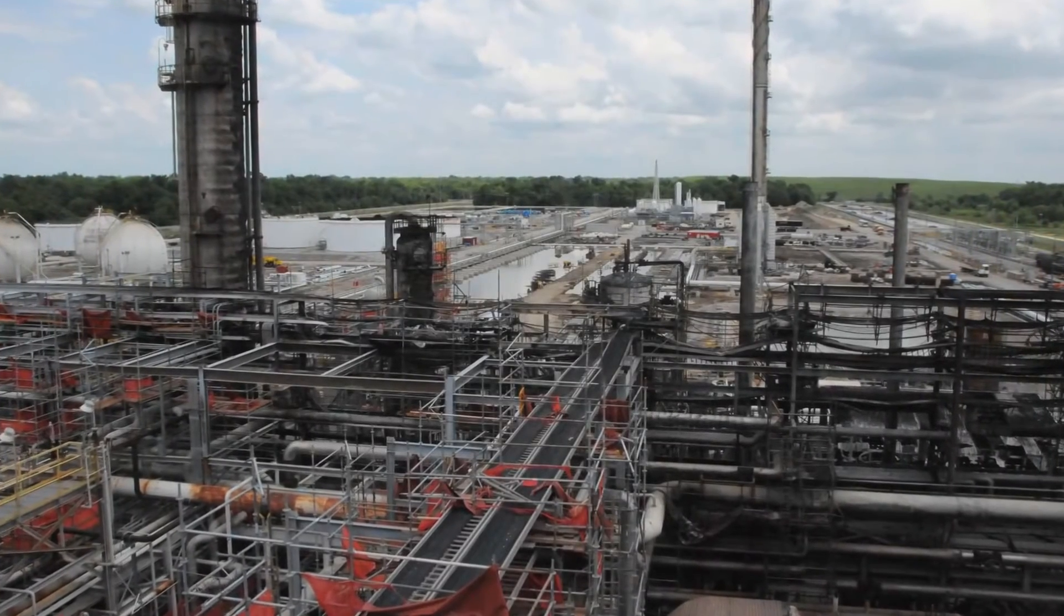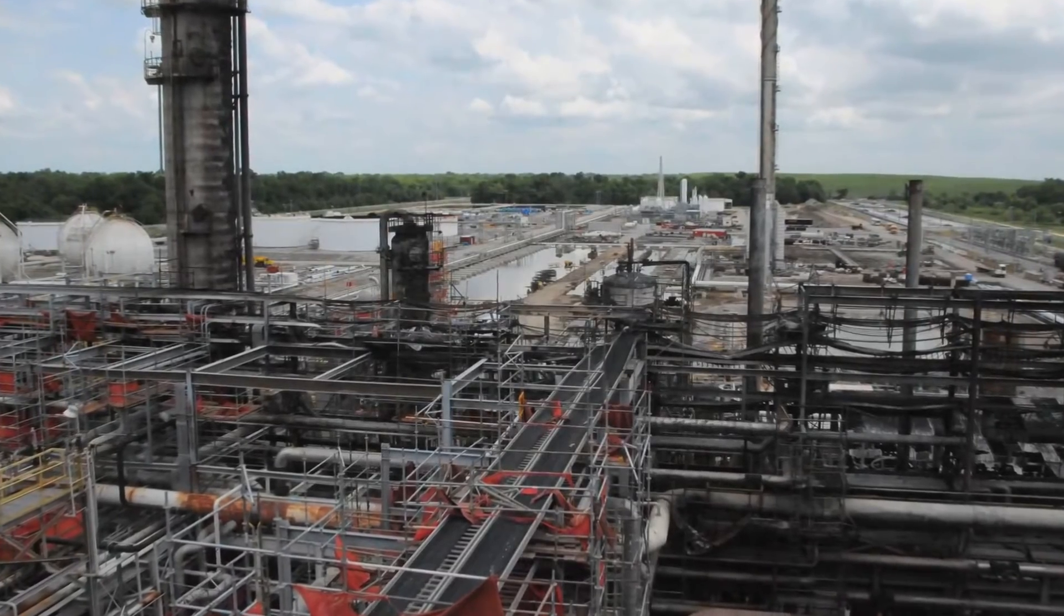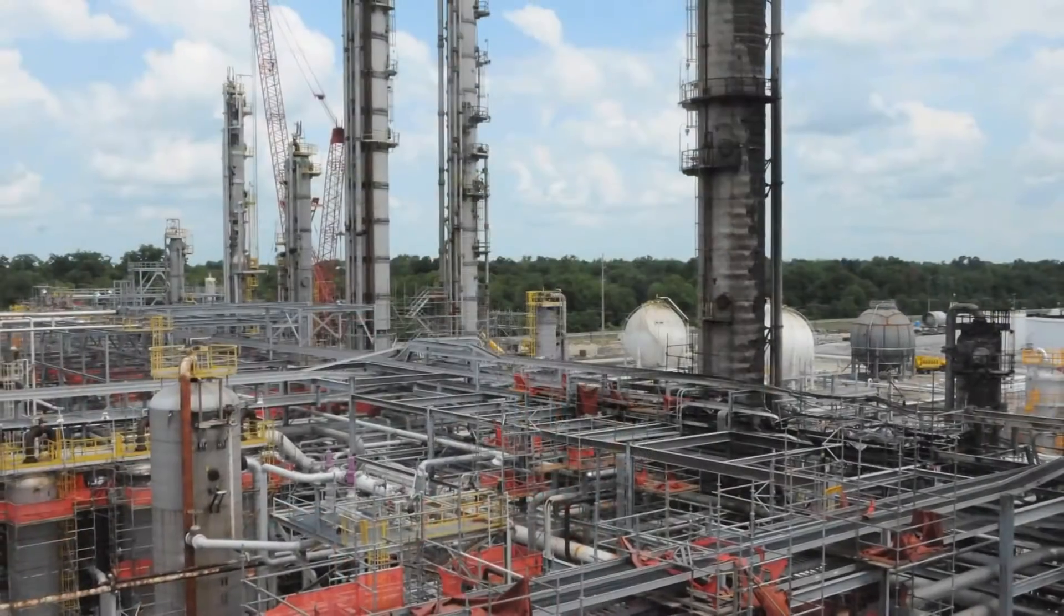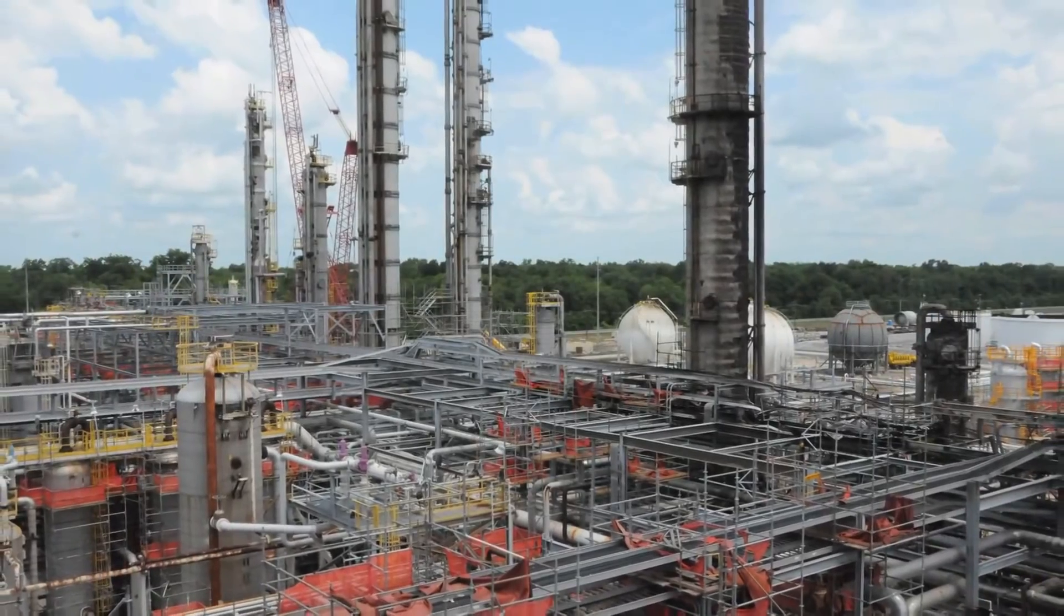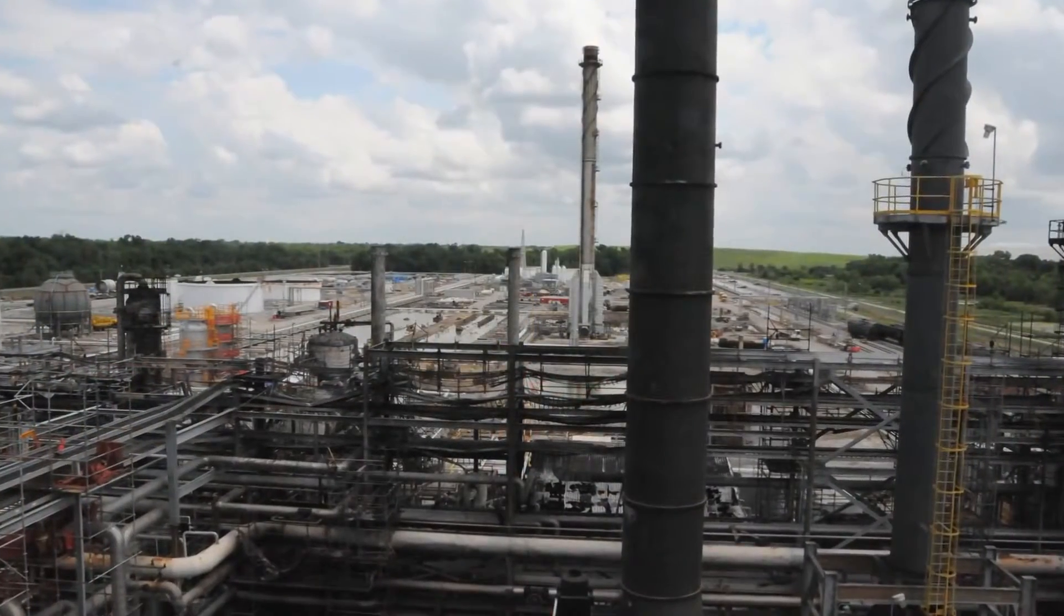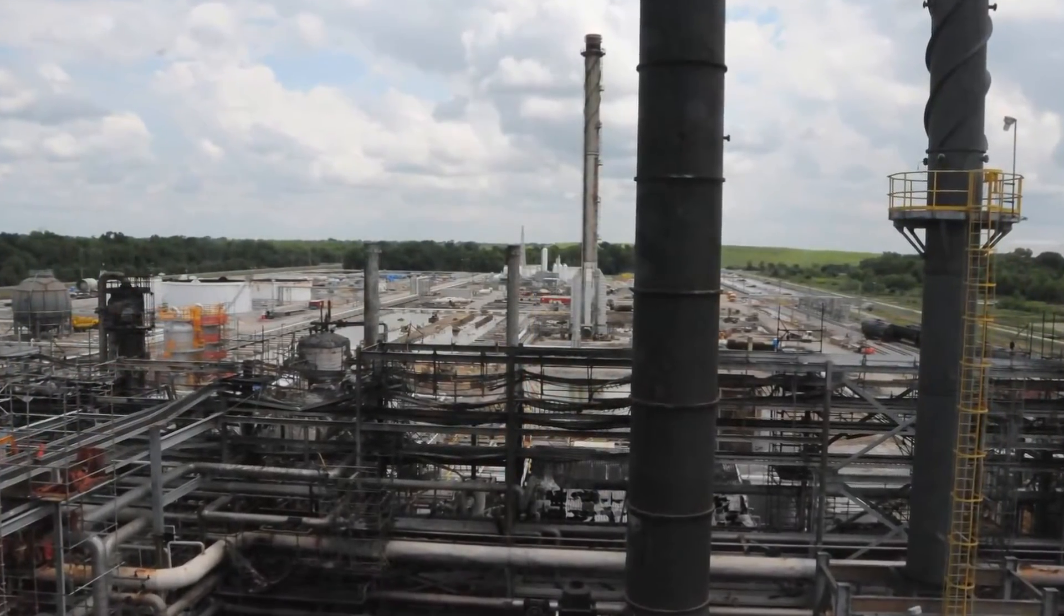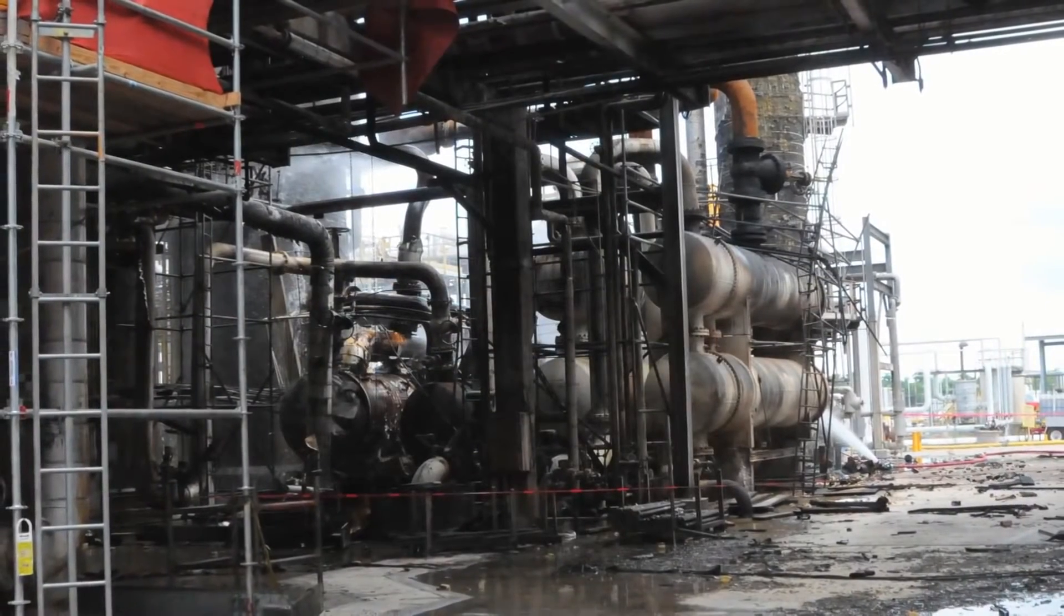The Williams-Geismar Olefins plant is located in Geismar, Louisiana. The plant produces ethylene and propylene, chemicals used in the petrochemical industry to make a variety of products including plastics and antifreeze.